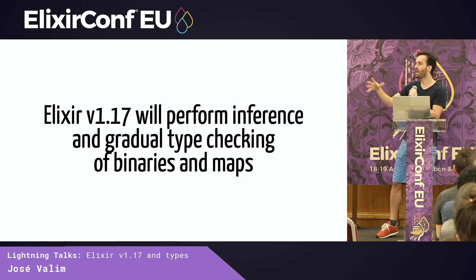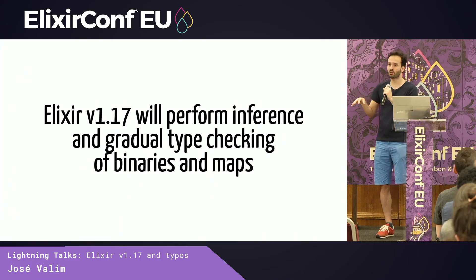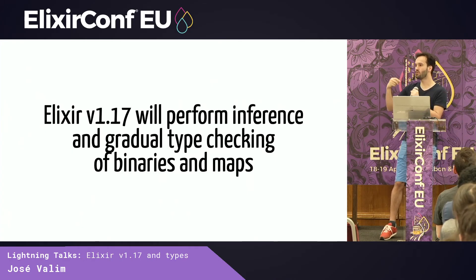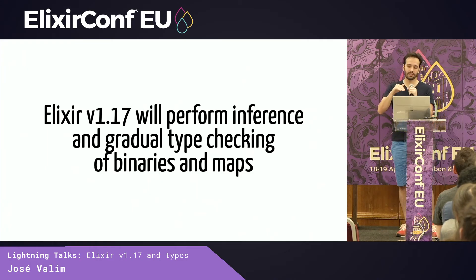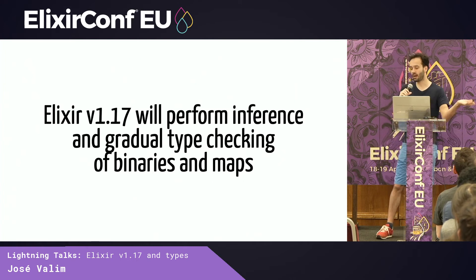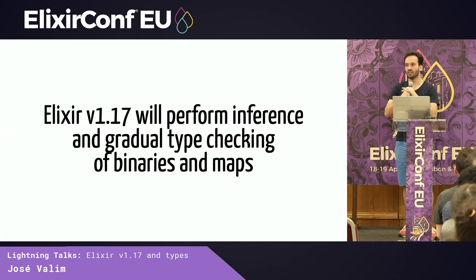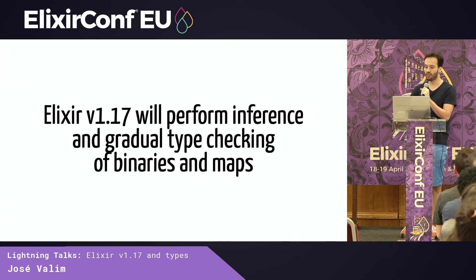There is no typing API — you're not going to be typing your programs yet. We are running the type system on your existing code, using patterns and information to find potential bugs and report on them. The reason we chose binaries and maps is that binaries is the simplest thing we can type, while maps is the most complex type to implement from the type system's perspective. Starting with the easiest and hardest means if we can do those two, there's confidence we can handle everything in between.